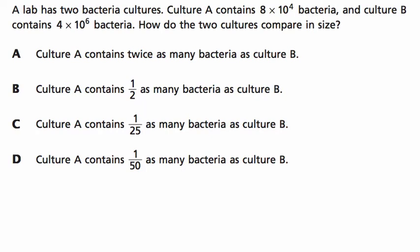Hello and welcome. We're going to solve this problem together, but first, try it on your own. Alright, so it says that a lab has two bacteria cultures. Culture A contains 8 times 10 to the 4th bacteria, and culture B contains 4 times 10 to the 6th bacteria. How do the two cultures compare in size?